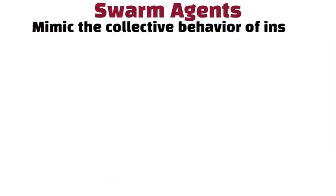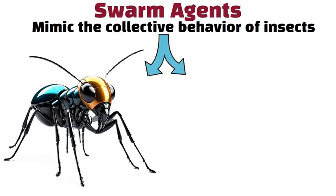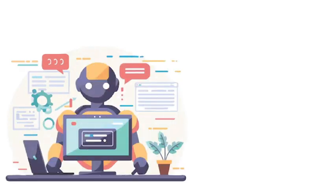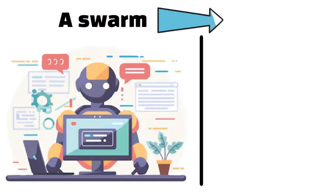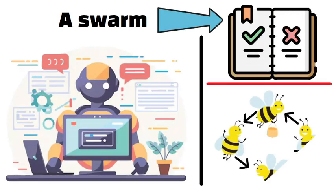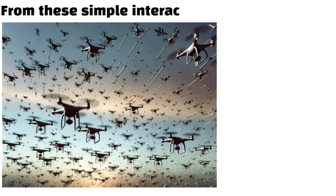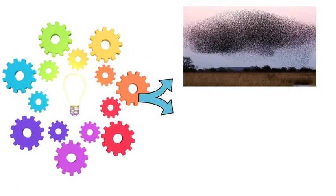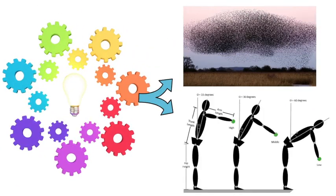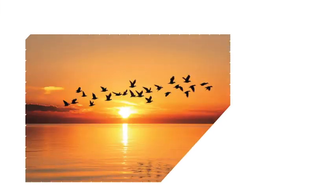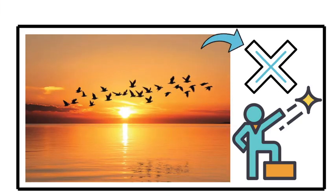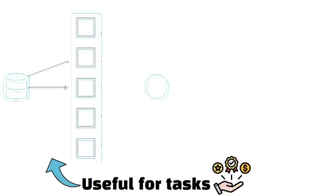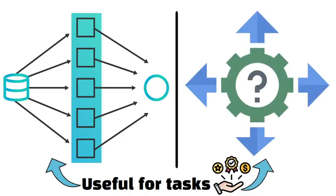Swarm agents mimic the collective behavior of insects like ants or bees. Instead of a single agent making all decisions, a swarm of simple agents follows basic rules and interacts locally with one another. The overall behavior of the swarm emerges from these simple interactions, allowing them to solve complex problems such as searching large areas or coordinating movements. Imagine a flock of birds moving in perfect harmony without a leader — that is the essence of swarm intelligence. These agents are useful for tasks that benefit from parallel processing and distributed decision making.